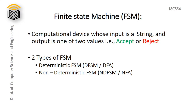FSM is a computational device whose input is a string, and output is one of two values: accept or reject. Basically there are two types of FSM. First one is deterministic finite state machine DFSM, also known as DFA. Second one is non-deterministic finite state machine NDFSM or NFA.